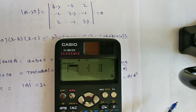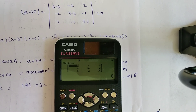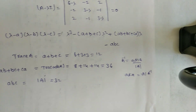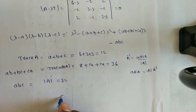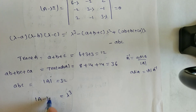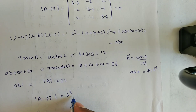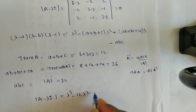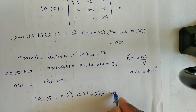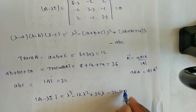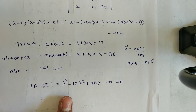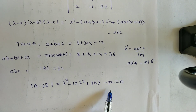By using the calculator you can verify. Now writing these values into the characteristic equation: det(A - λI) = λ³ - 12λ² + 36λ - 32 = 0. This is the characteristic equation.